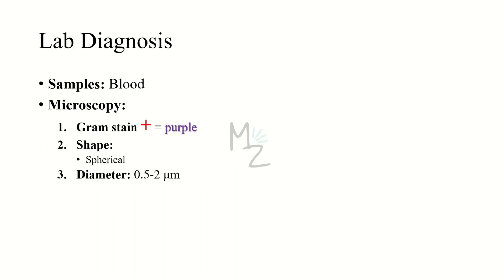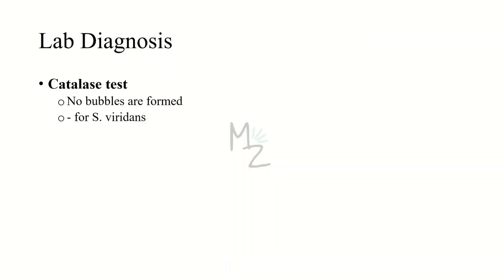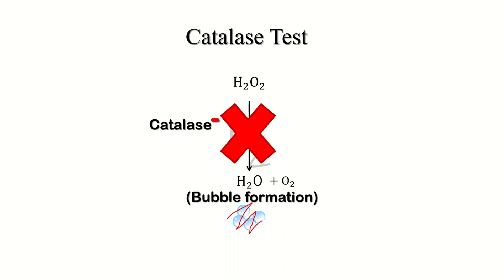Lab diagnosis: We need samples of blood, or from the affected area — for example, fluid from a brain abscess. For microscopy using gram staining, this bacterium appears gram-positive (purple colored), spherical in shape, with a diameter of 0.5 to 2 micrometers, arranged in chains. Catalase test: since Streptococcus viridans has no catalase enzyme, the test is catalase negative — no bubbles will be formed. Normally, catalase converts hydrogen peroxide into water and oxygen producing bubbles, but in the case of Streptococcus viridans, there is no catalase, so no conversion and no bubble formation occur.